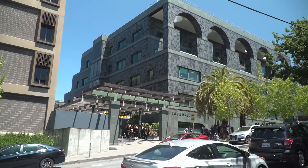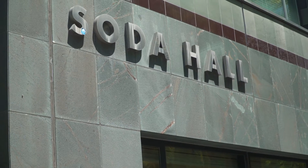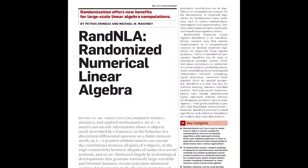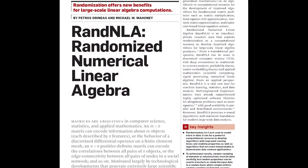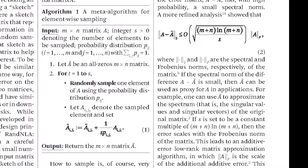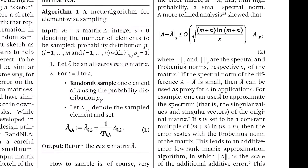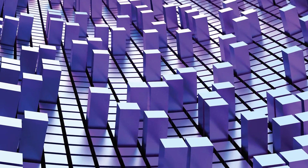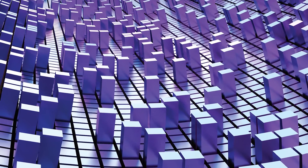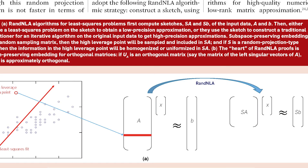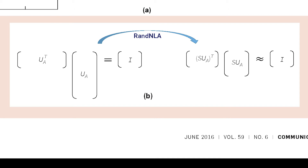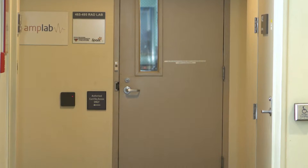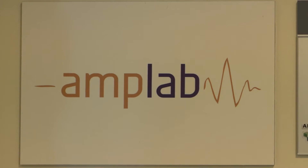At UC Berkeley, Professor Michael Mahoney has been working with computer scientist Petros Drineas on a potential solution. Randomized Numerical Linear Algebra is an interdisciplinary approach that uses randomization as a computational or algorithmic resource to solve massive linear algebra problems by efficiently sampling to create new smaller matrices that can serve as a proxy for the original datasets but are more manageable in size.